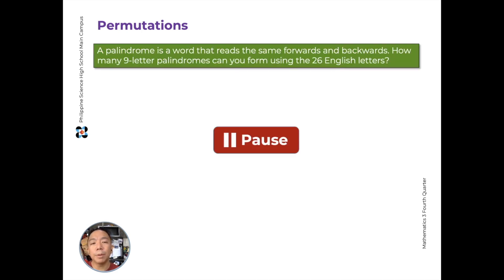Let's look at some examples. So a palindrome is a word that reads the same forwards and backwards. How many 9-letter palindromes can you form using only the 26 English letters? Our assumption here is they don't need to be real words. They can just be arrangements of letters even if they don't mean anything. So we could pause this, and I'll give you some time to compute, and then let's compare our answers.